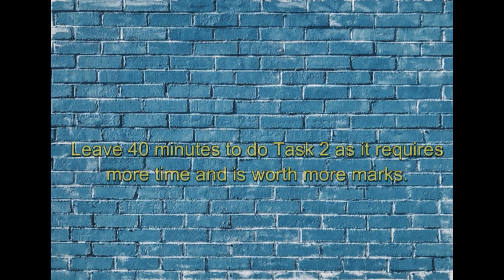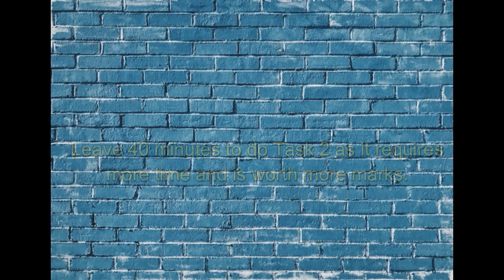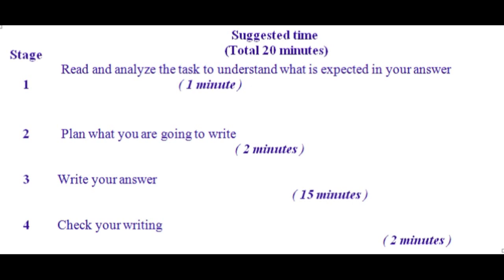Task 2 requires more time and is worth more marks. The time plan for Task 1 has four stages: one — read and analyze the task (1 minute); two — plan what you are going to write (2 minutes); three — write your answer (15 minutes); four — check your writing (2 minutes).